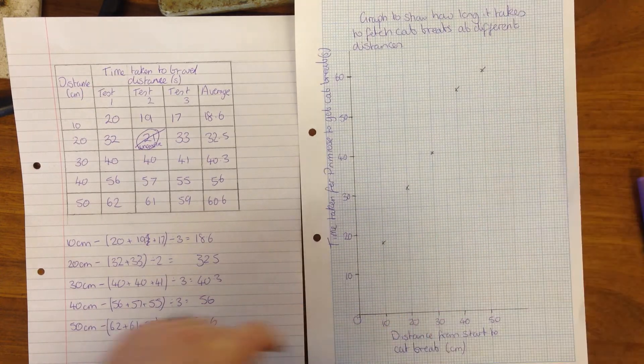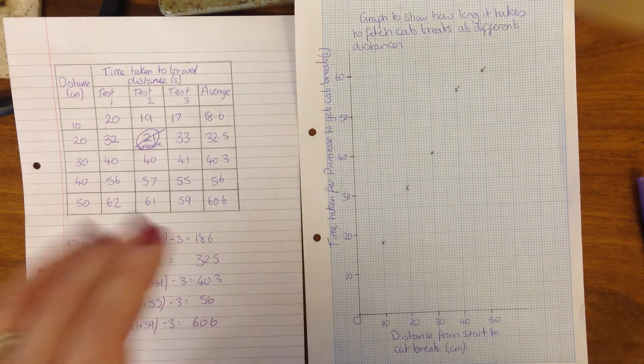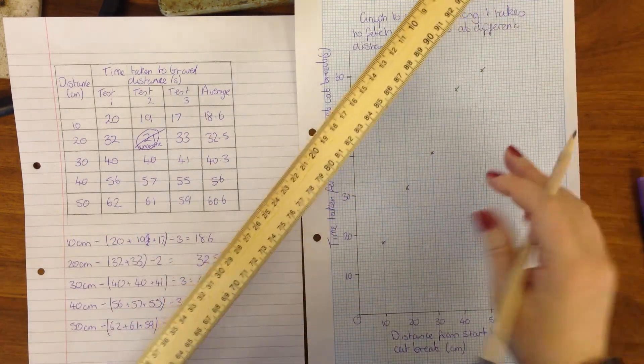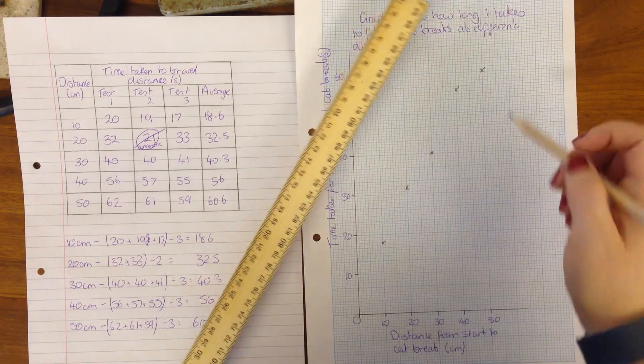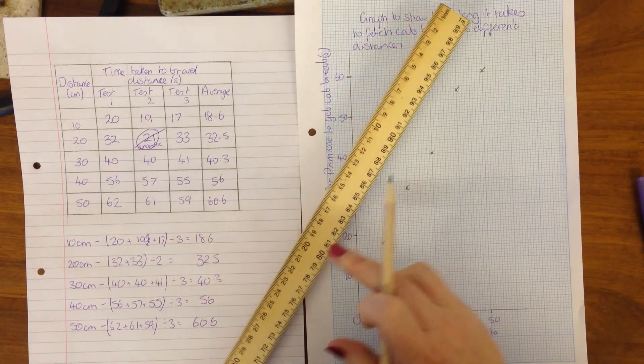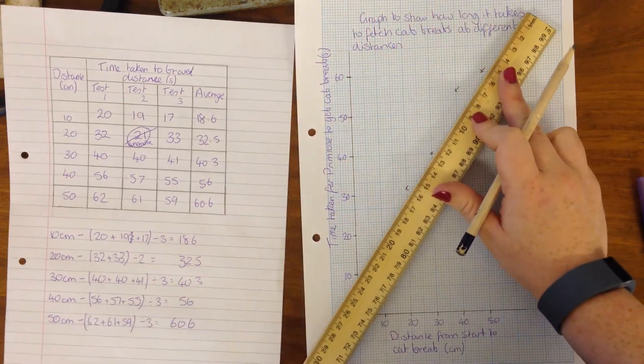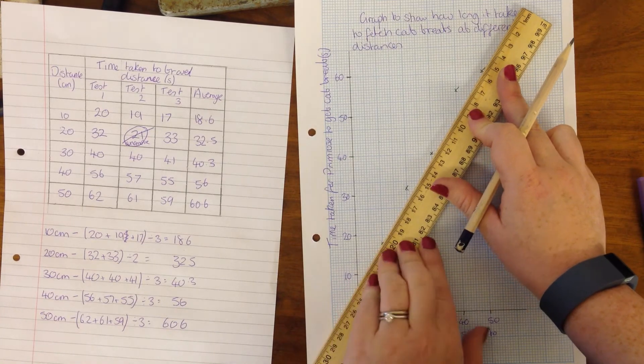And then you need to get a ruler. I do not suggest using a meter rule in your exam, but that's all I've got available. And you're going to want to draw a line of best fit. Now you can see these are in a pretty straight line, so I'm going to put my ruler here and join up these ones, like that.